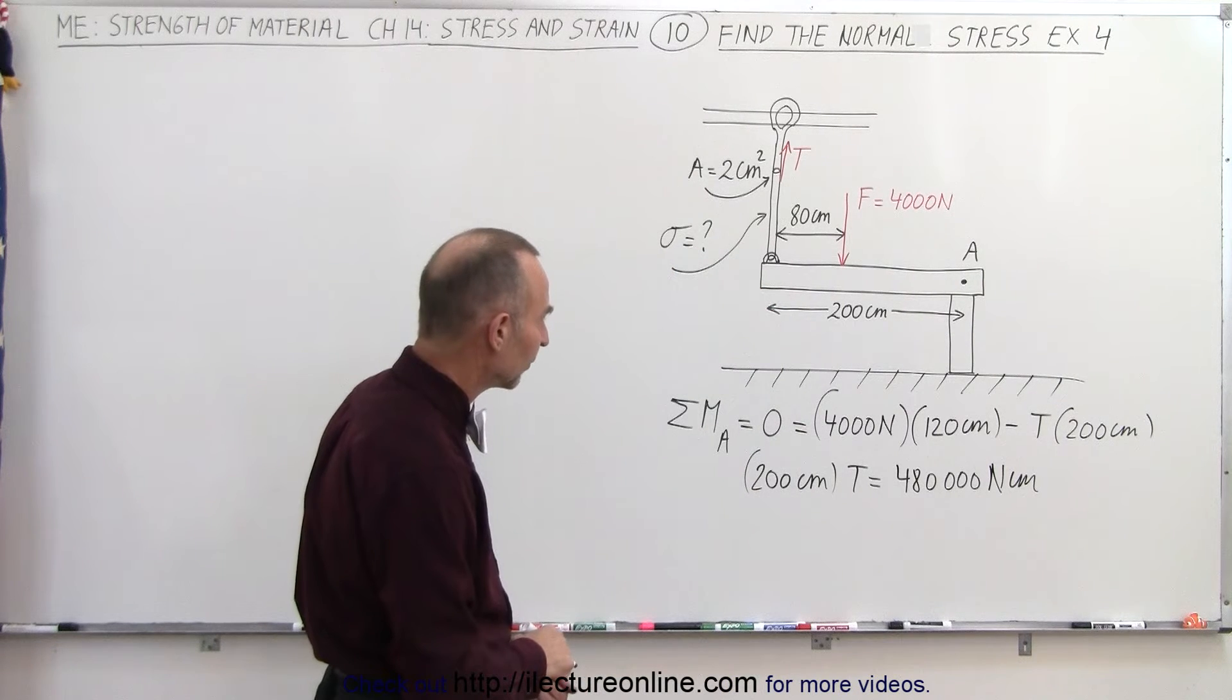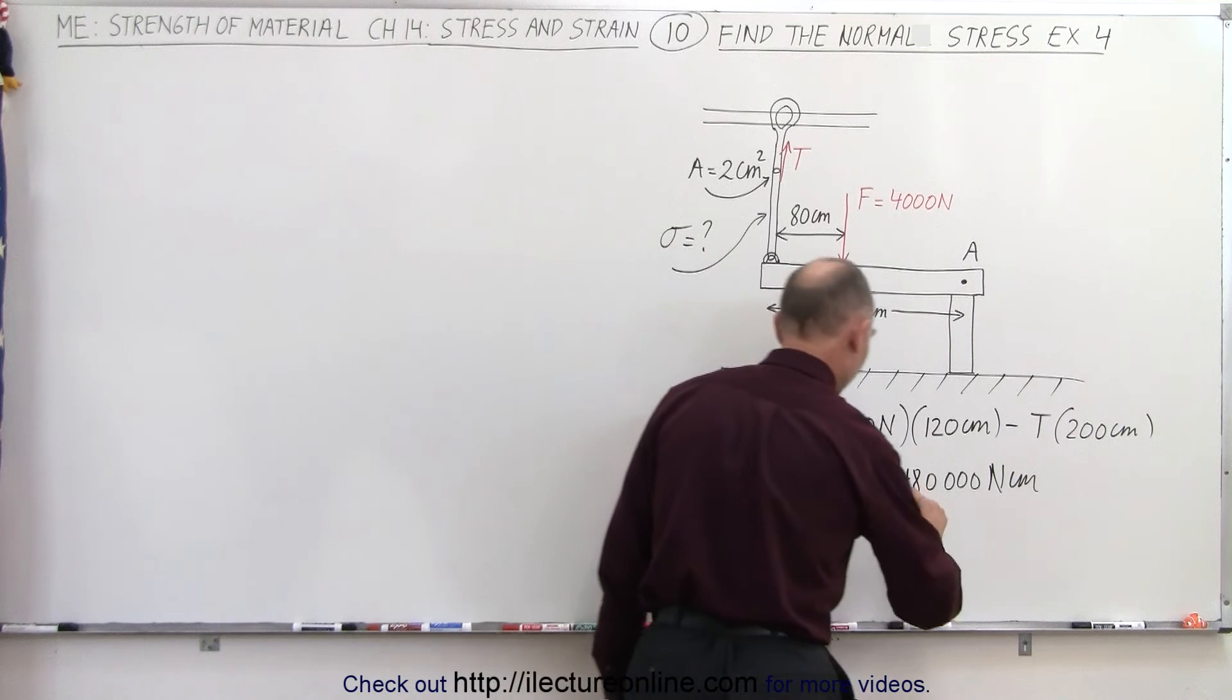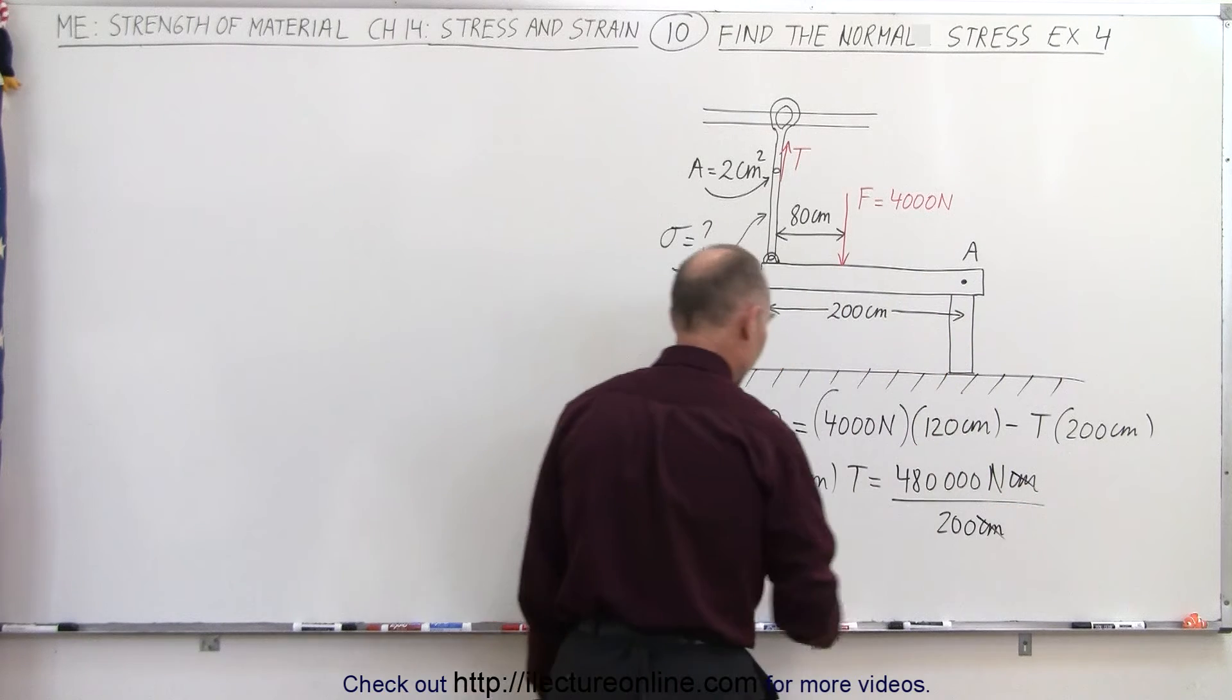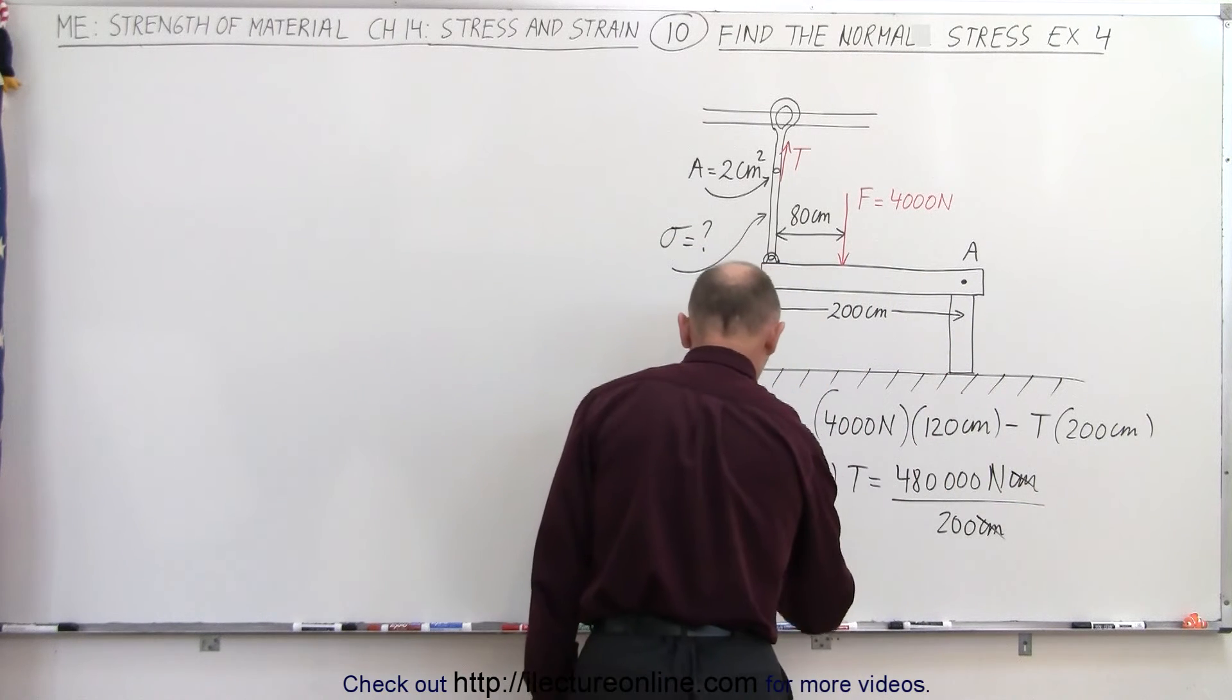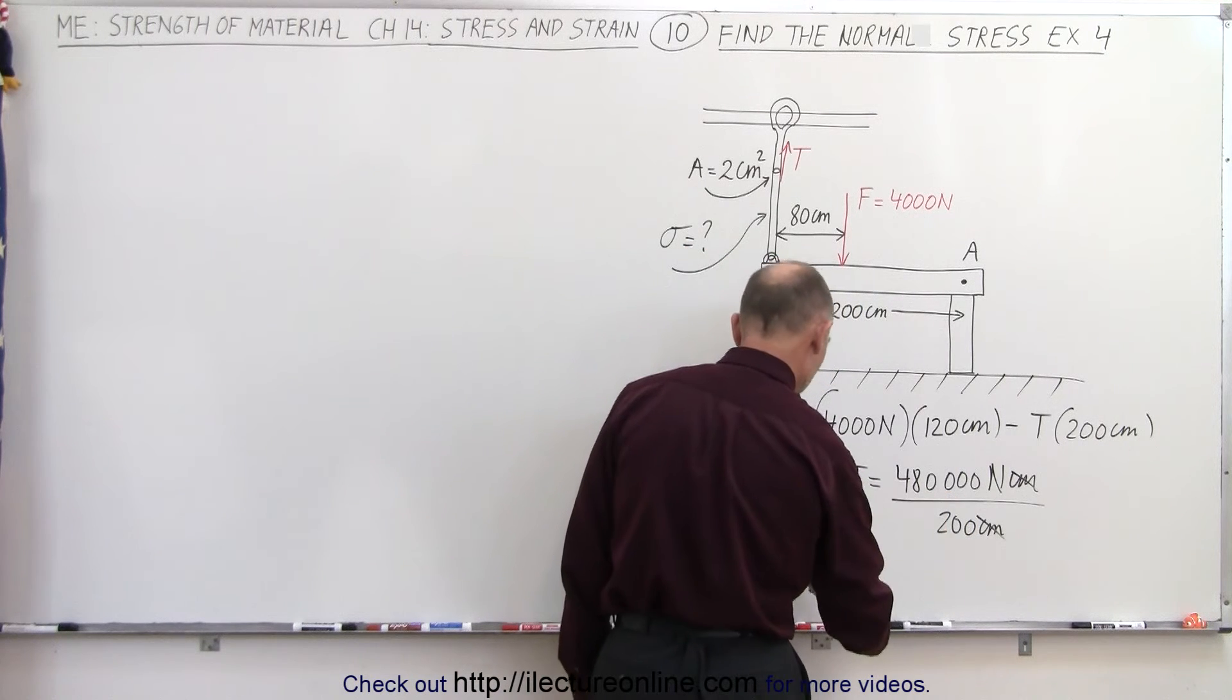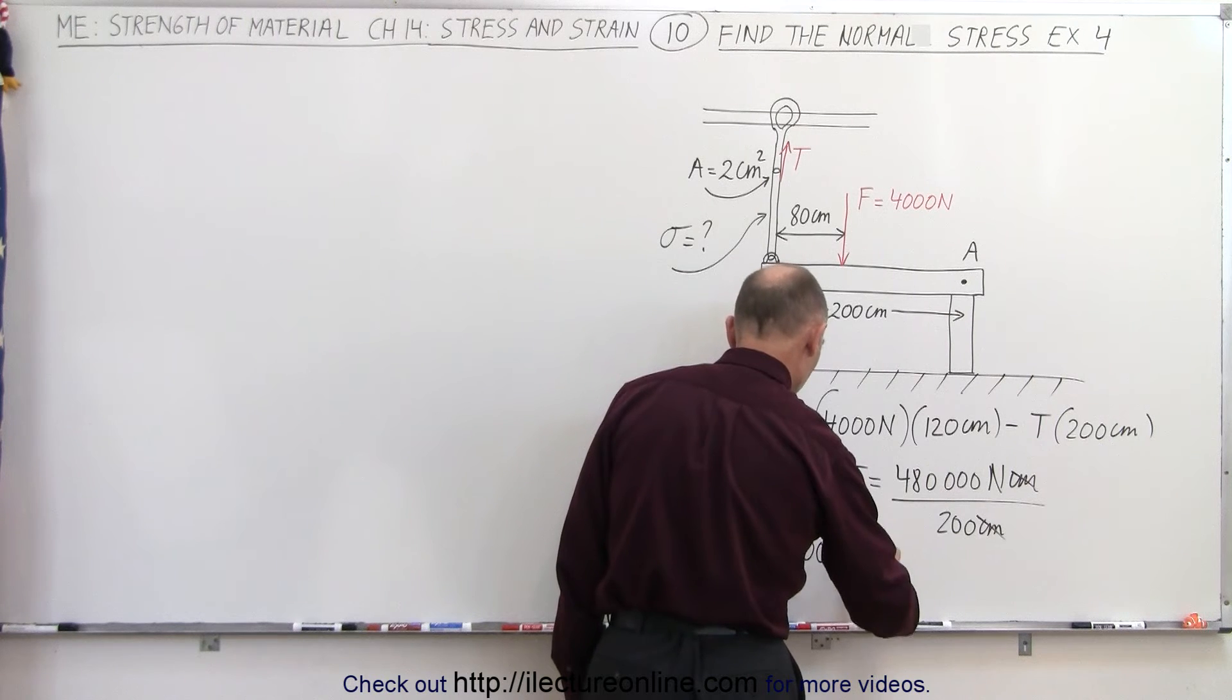And then of course, when we divide both sides by 200 centimeters, notice the centimeters cancel out, two of the zeros cancel out, so the tension inside that cable would be 2,400 newtons.